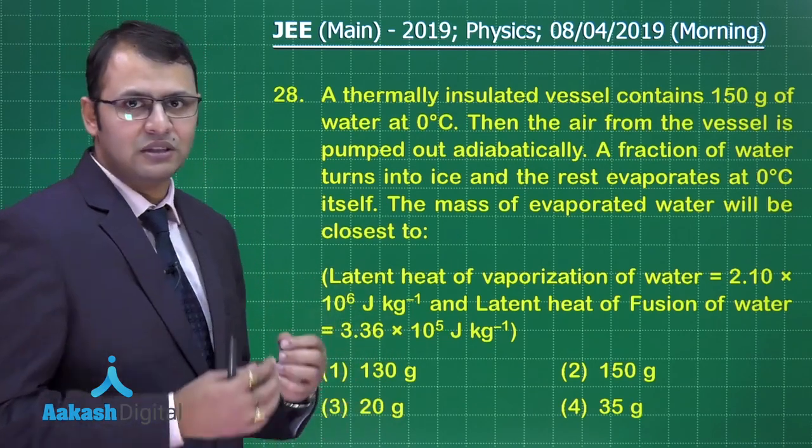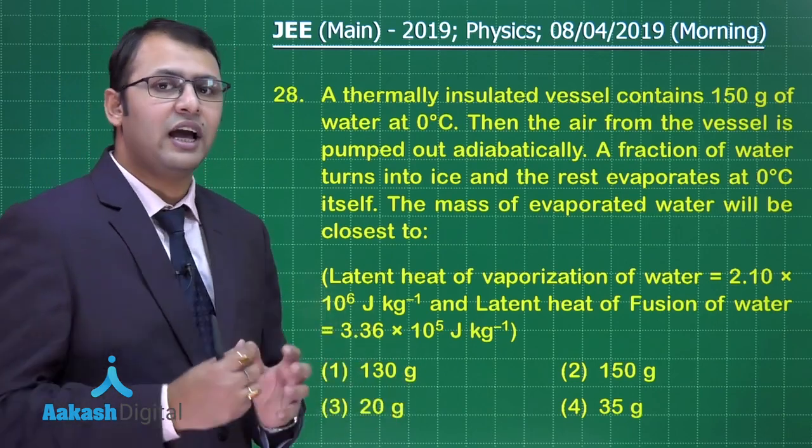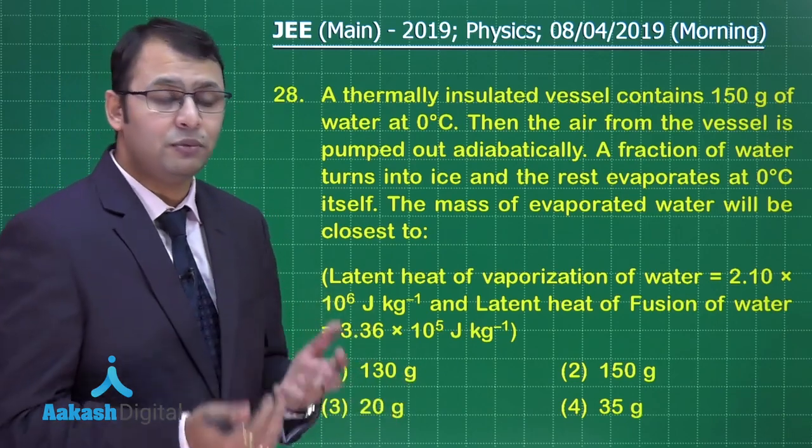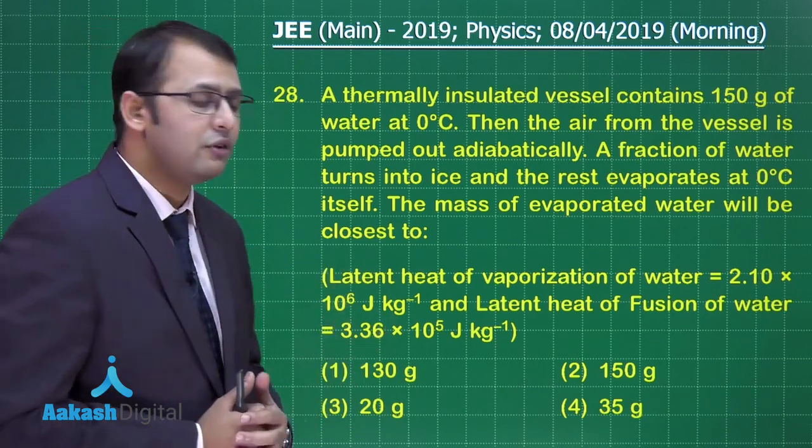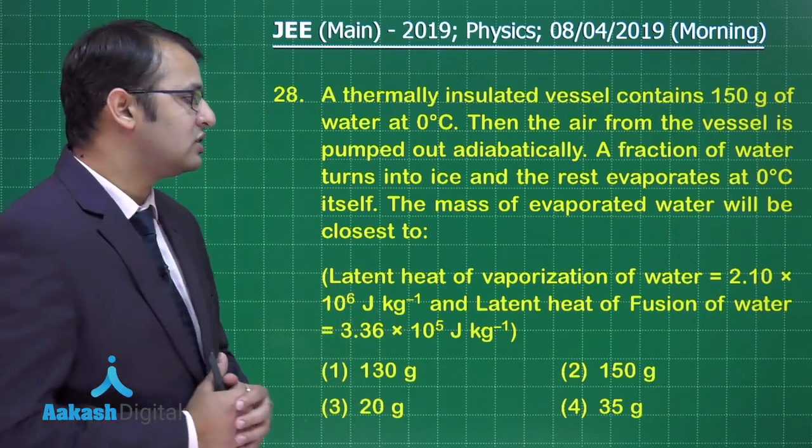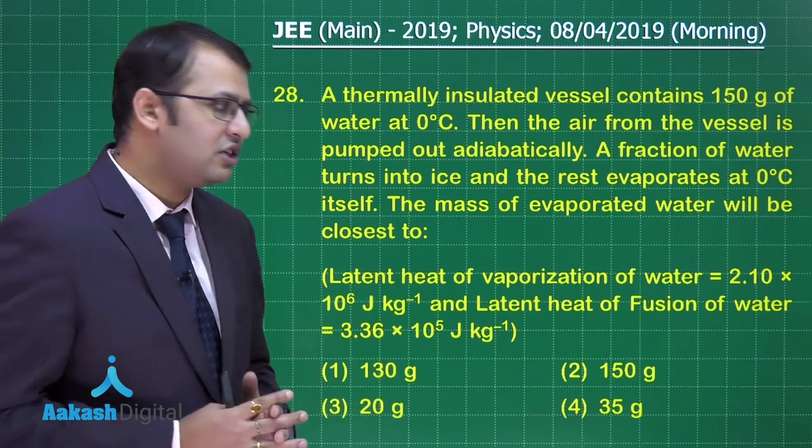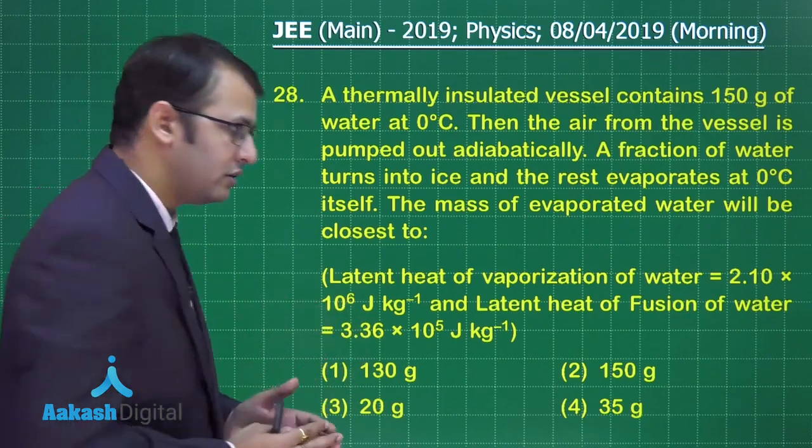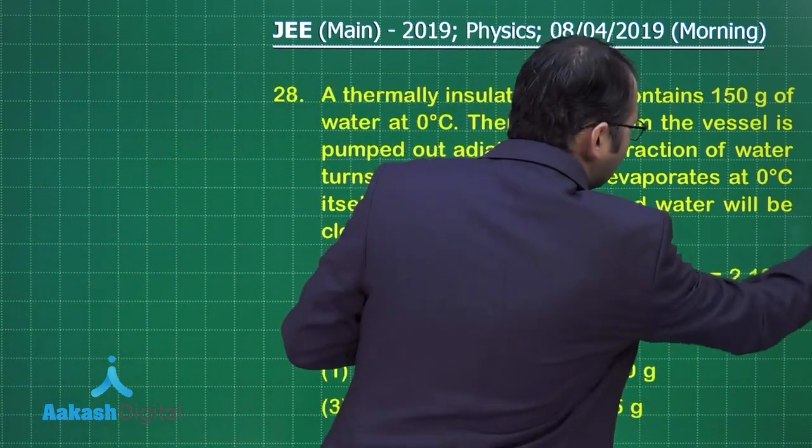Some amount of energy was taken out and it was given to some amount of water to evaporate. So the mass of evaporated water will be - these are the values given to us, the latent heat of vaporization and latent heat of fusion of water. If you assume that some M mass of water has evaporated,